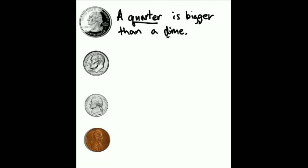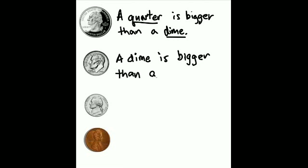This is a quarter, this is a dime. A dime, d-i-m-e, is, i-s, bigger, b-i-g-g-e-r, than, t-h-a-n, a nickel, n-i-c-k-e-l. So a dime is bigger than a nickel.